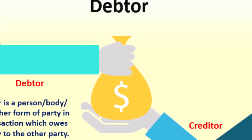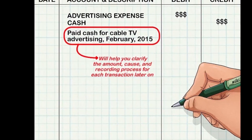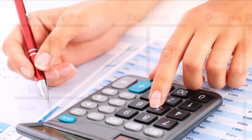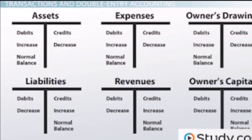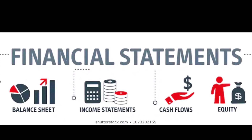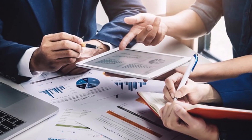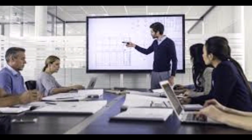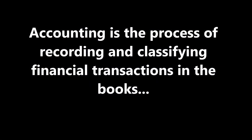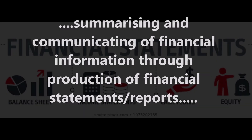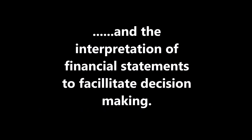What I am trying to say is that accounting starts with recording and classifying the transactions in the books. After all the information has been classified in the books, this information is processed by applying various rules and conventions to produce what we call financial statements. These financial statements serve to communicate the status of the business — whether it is making a profit or a loss. Upon preparation of financial statements, these statements are scrutinized and create a basis for decision making. This brings us to the definition that accounting is the process of recording and classifying financial transactions in the books, summarizing and communicating financial information through production of financial statements or reports, and the interpretation of financial statements to facilitate decision making.